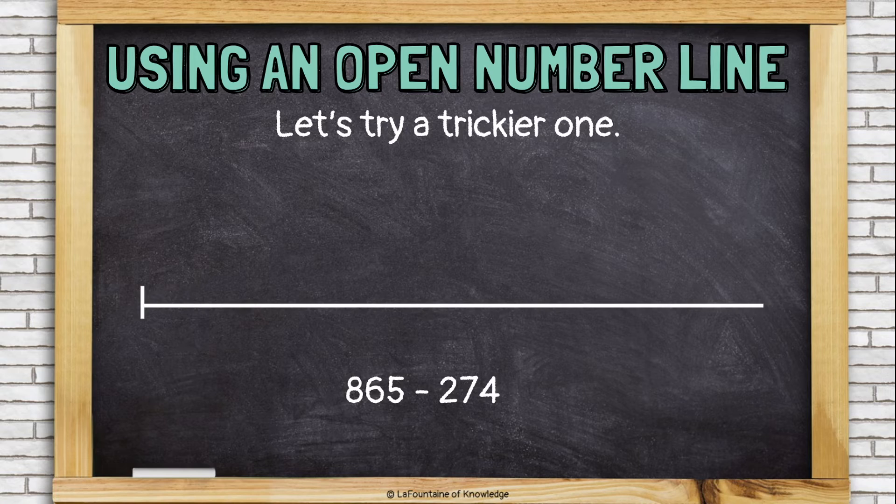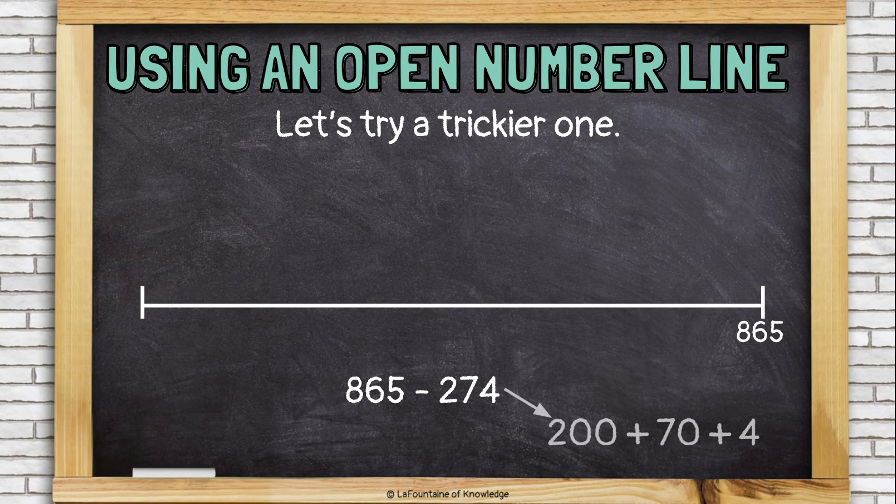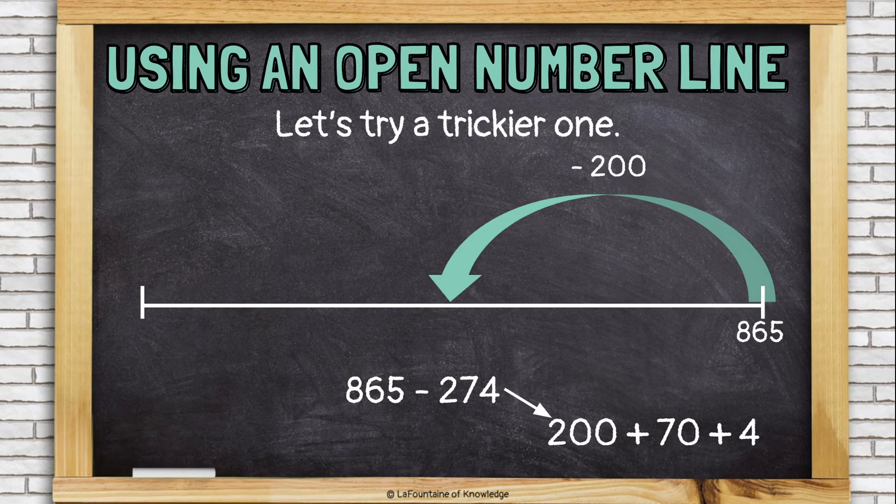Now let's try a trickier one. 865 minus 274. So I'll label the end of my line 865, because remember I'm moving backwards. And I'll break 274 apart into chunks. Let's take away 200. 865 minus 200 is 665. That was easy.